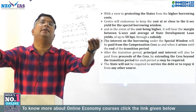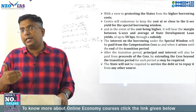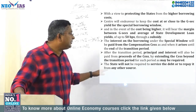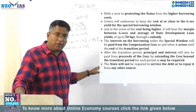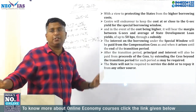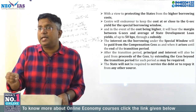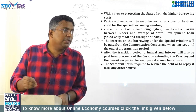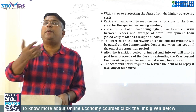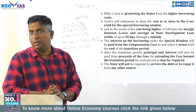The states under option one will not be required to service the debt or repay it from any other source. Under the special window program, all the money the state receives — its interest and the principal amount — the state need not pay back from its own sources. It will be paid through the GST Compensation Cess and transferred over a period of time.